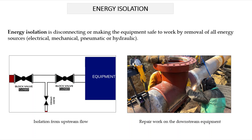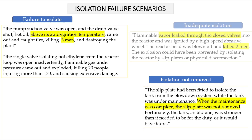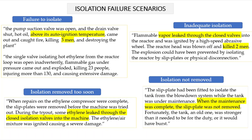Energy isolation is a critical and extremely important process for the safety of plant operations. It is the disconnection of equipment from all energy sources in order to allow some intervention works to be conducted on it. There were several industrial examples in history where fatal or serious injury accidents occurred as a result of inadequate isolation practices or improper implementation of procedures.